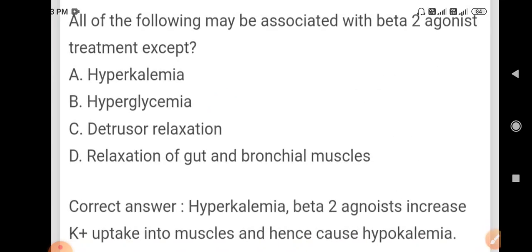Beta-2 agonist increase potassium uptake into muscles and hence causes hypokalemia.